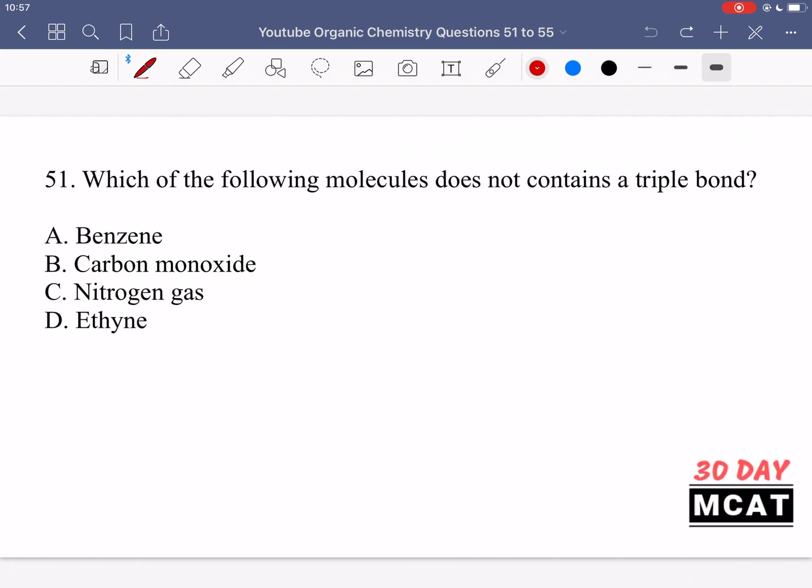Now let's go through the questions together. In question 51, we're asked which of the following molecules does not contain a triple bond. For this, we need to actually know these names of organic structures and know what their actual structure looks like.